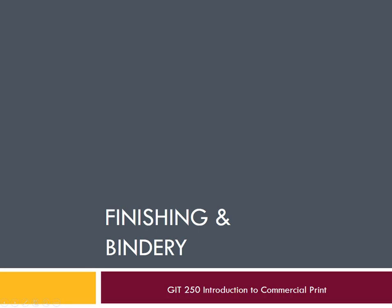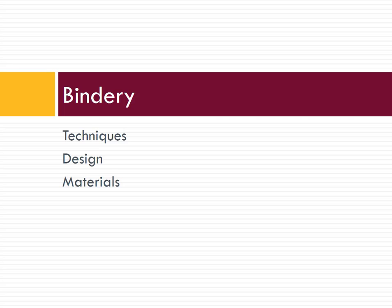Hello and welcome to our next lecture in GIT 250. This time we're talking about finishing and bindery, two important components of the print process. Every sheet that comes off of a press is not finished — it needs to be bound or finished. Those are two separate categories or designations for things we do to press sheets to make them into the finished product.